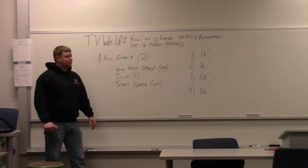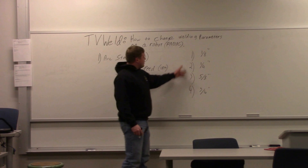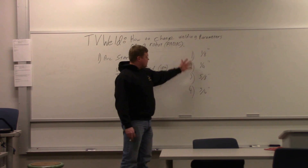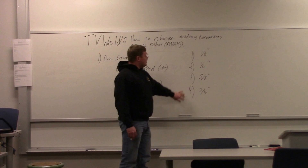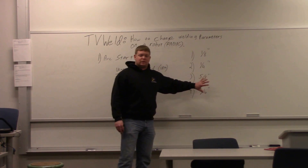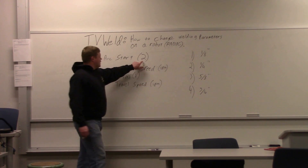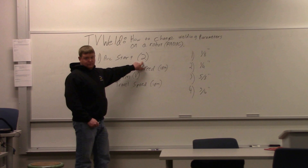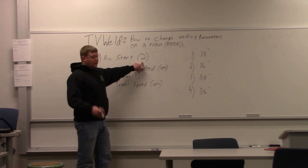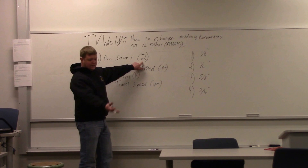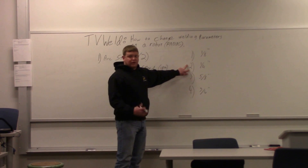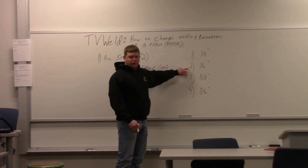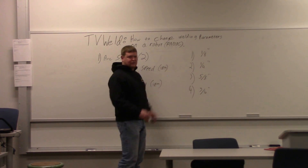Some people will take each number and assign it to a material thickness — like eighth inch, quarter inch, five eighths, three quarters — and they'll have parameters for those thicknesses. All you've got to do is change the number for whatever thickness you're using. Not everybody does that. Some people do it per part. If you're building a table, for instance, you'd have parameter set two labeled 'table.' Same concept.